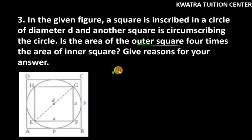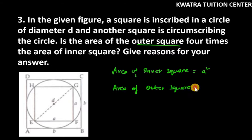First of all, let's talk about the area of inner square. Inner square is side into side, which is a². Now, if we talk about the area of outer square, what is b²?